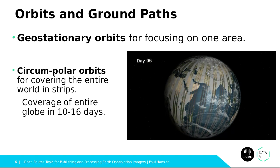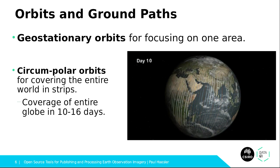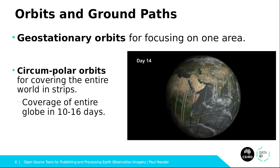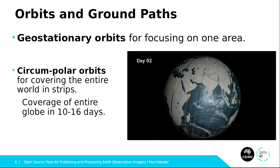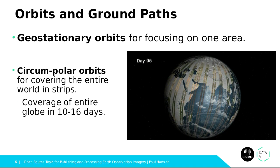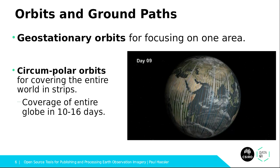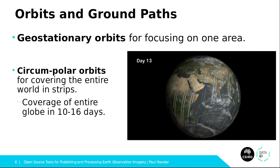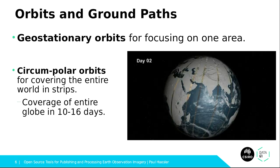Satellites image the ground below them, so the coverage they have of the Earth is a function of their ground path, which is a function of their orbit around the Earth. Geostationary orbits are high-altitude orbits where the satellite rotates around the Earth at the same speed the Earth itself rotates on its axis, so you're always more or less above the same point on the equator. The ground path basically describes a pattern around a point on the equator — it can be a circle, a sort of figure eight, or even almost square.